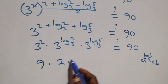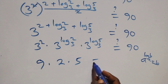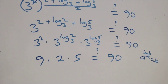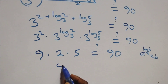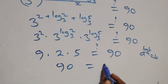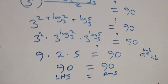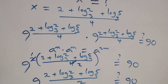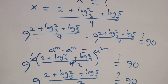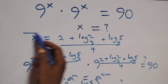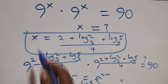So we have 9 times 2 times 5 equals 90. And 2 times 5 is 10, and 10 times 9 is 90, which equals 90. The left hand side equals the right hand side. Therefore we conclude that x equals (2 plus log 2 base 3 plus log 5 base 3) all over 4 satisfies the given problem.